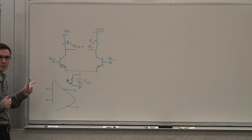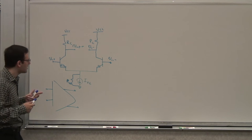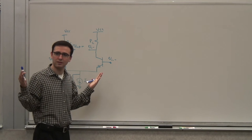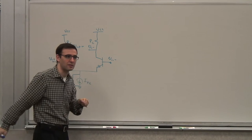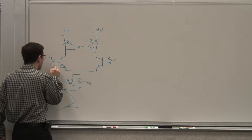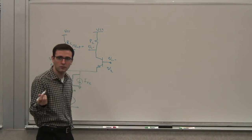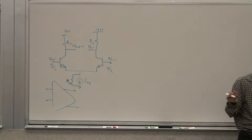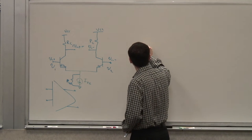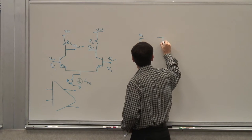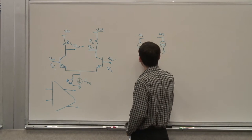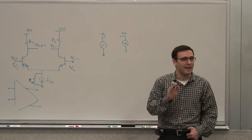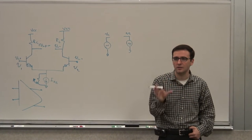Now I kind of divided my signal into two extreme cases — completely differential, or completely common mode. But in general, my signal could be V1 and V2 — two independent voltages. I claim I can take any pair of two voltages and decompose it as a differential component and a common mode component.